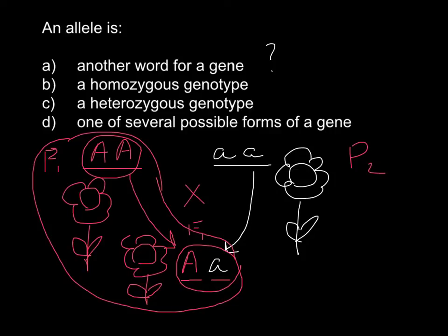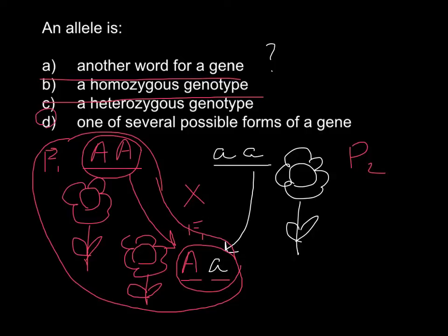We have homozygous. So we can also cross out answers B and C, because those are not correct answers. The correct answer is D: 'one of the several possible forms of the gene.' So we can also cross out answer A.